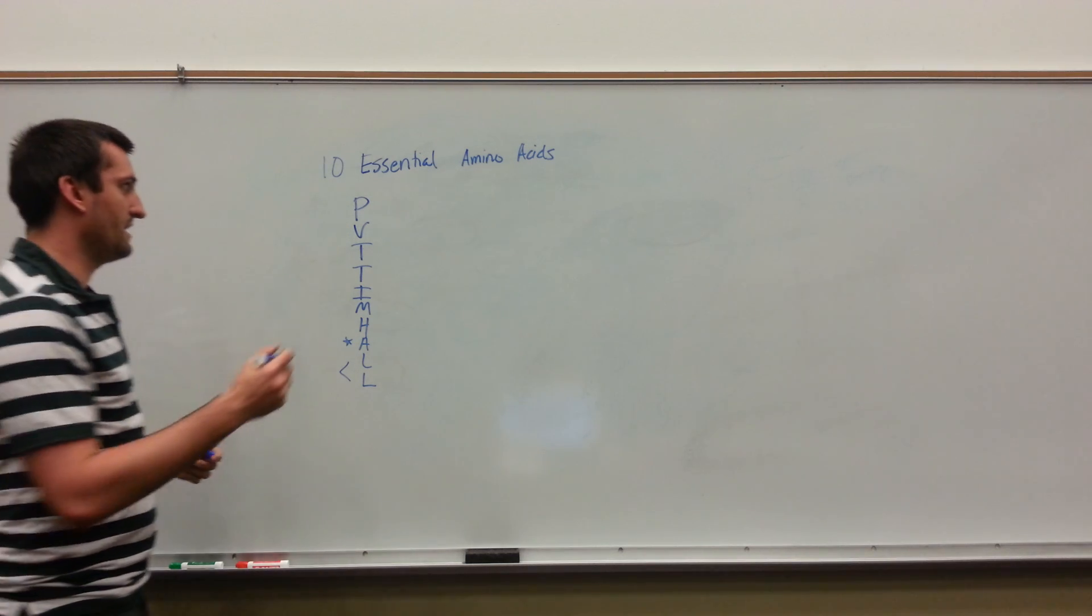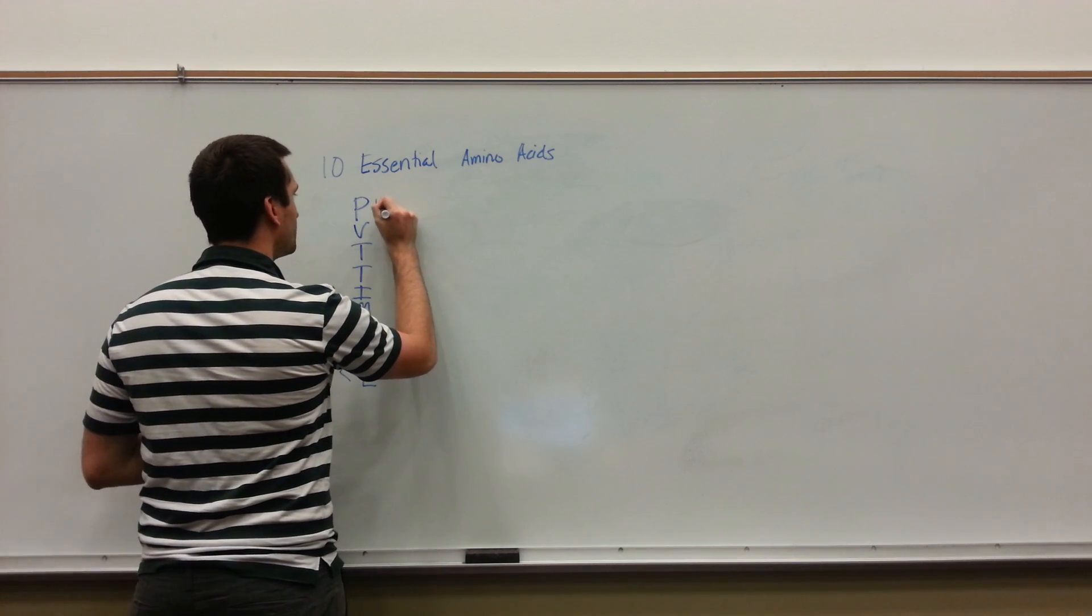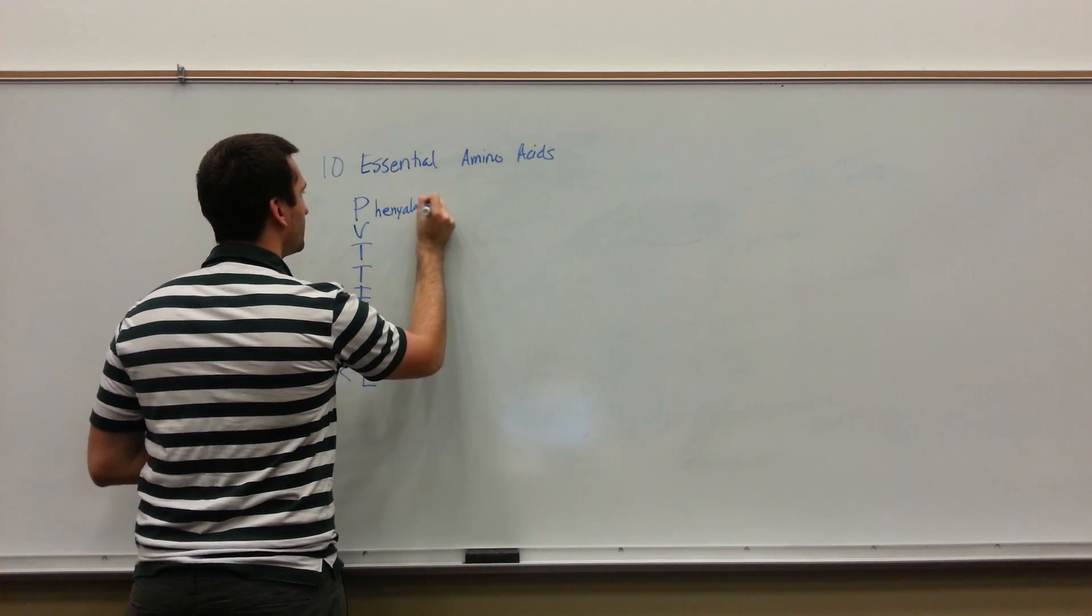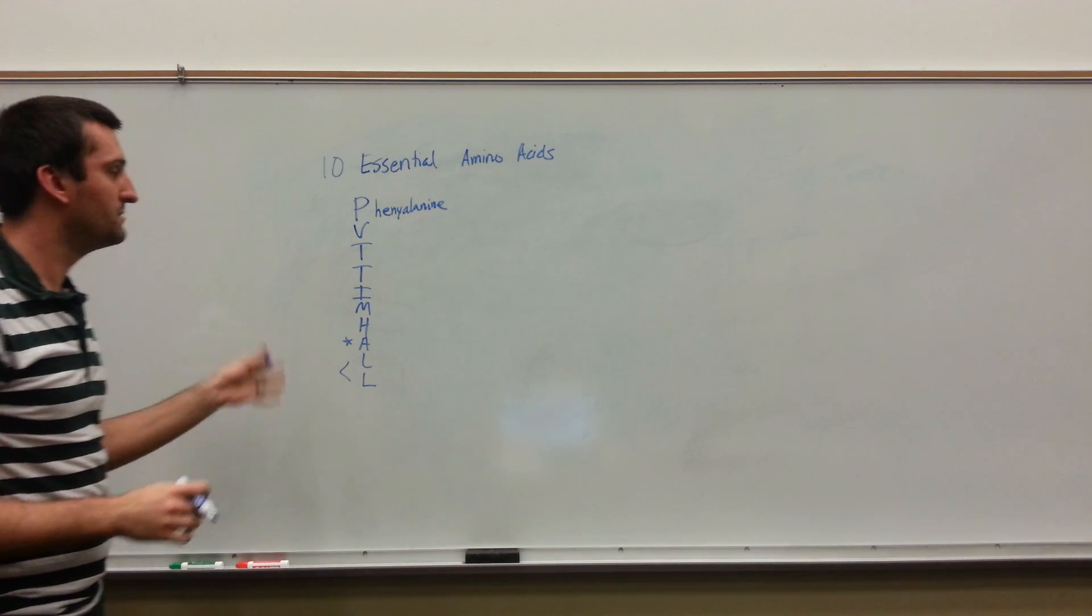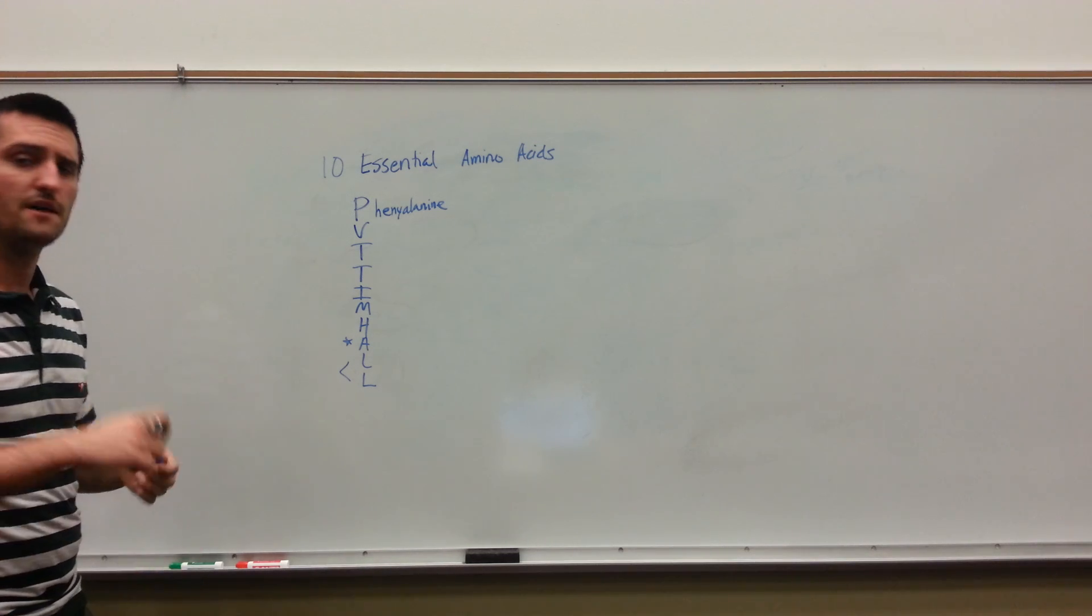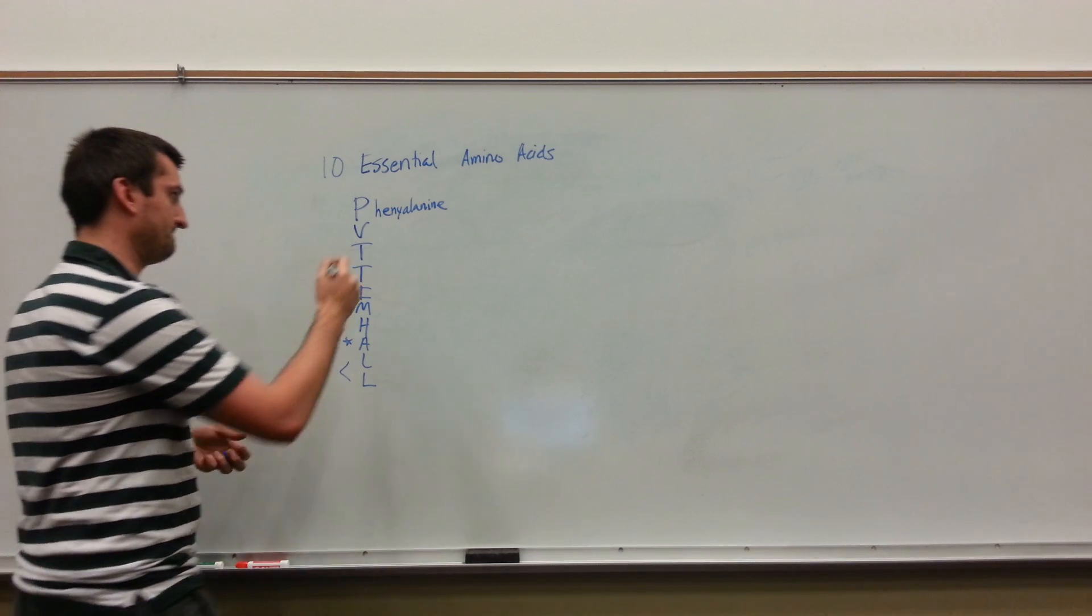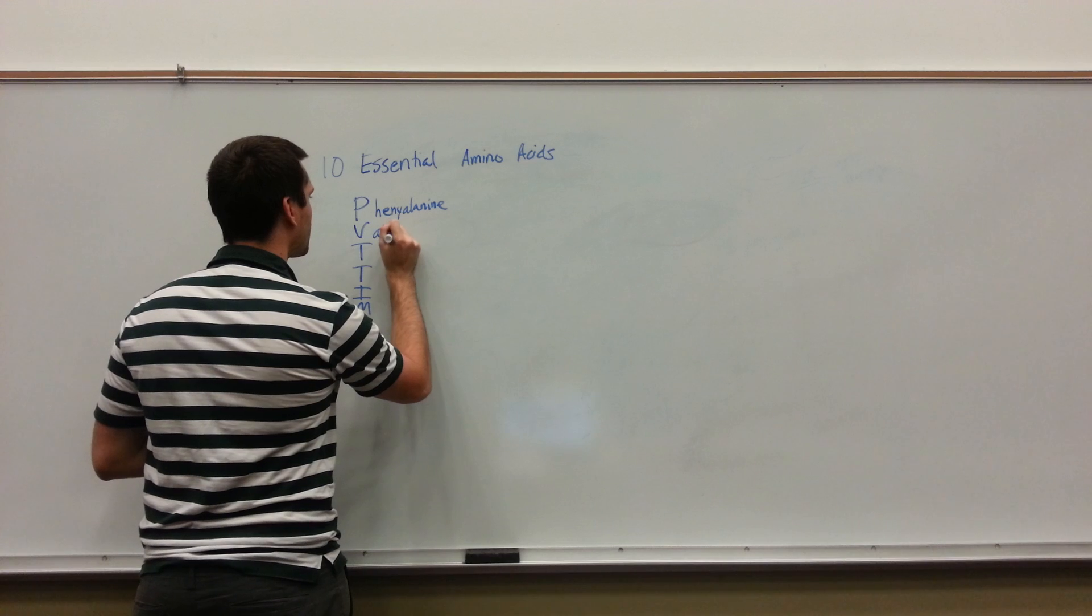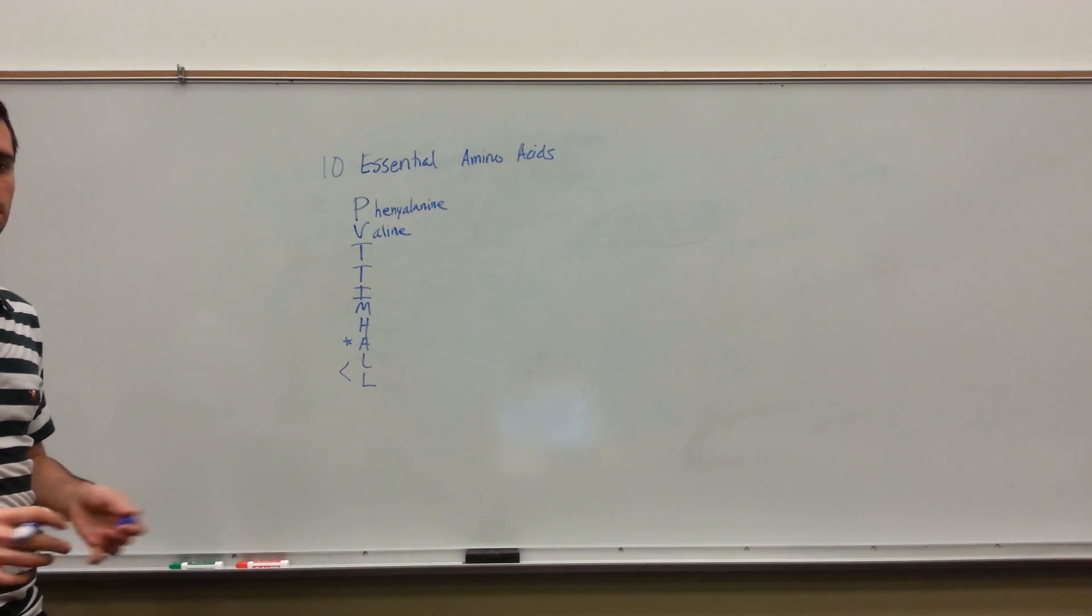The first one is phenylalanine. The P in Private Tim Hall stands for phenylalanine, which we cannot synthesize. The next one is valine. Valine is another essential.